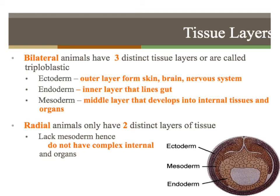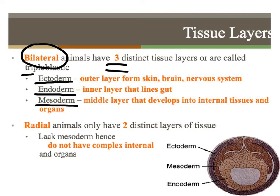Let's finish up with tissue layers. Bilateral animals — the ones with left and right sides — have three distinct tissue layers, and we can call them triploblastic. Tri means three. We have an ectoderm, an endoderm, and a mesoderm. Ectoderm is your outer layer, endoderm is your inner layer, and mesoderm is your middle layer. Radial animals, your circular body plans, only have two distinct layers of tissue — they do not have the mesoderm layer. Basically, they just have the outer layer and the inner layer.